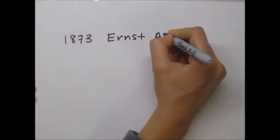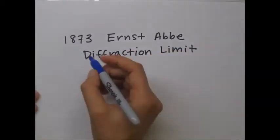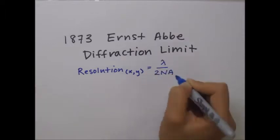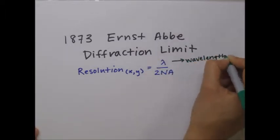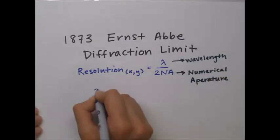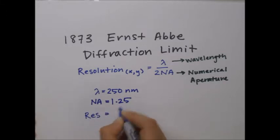In 1873, Ernst Abbe first described the diffraction-limited resolution of a microscope as the wavelength of light divided by twice the numerical aperture of the microscope. Today, most oil objectives have a maximum NA of 1.25, so even when imaging in the UV range with a wavelength around 250 nanometers, the maximum resolution of your microscope is limited to around 200 nanometers.